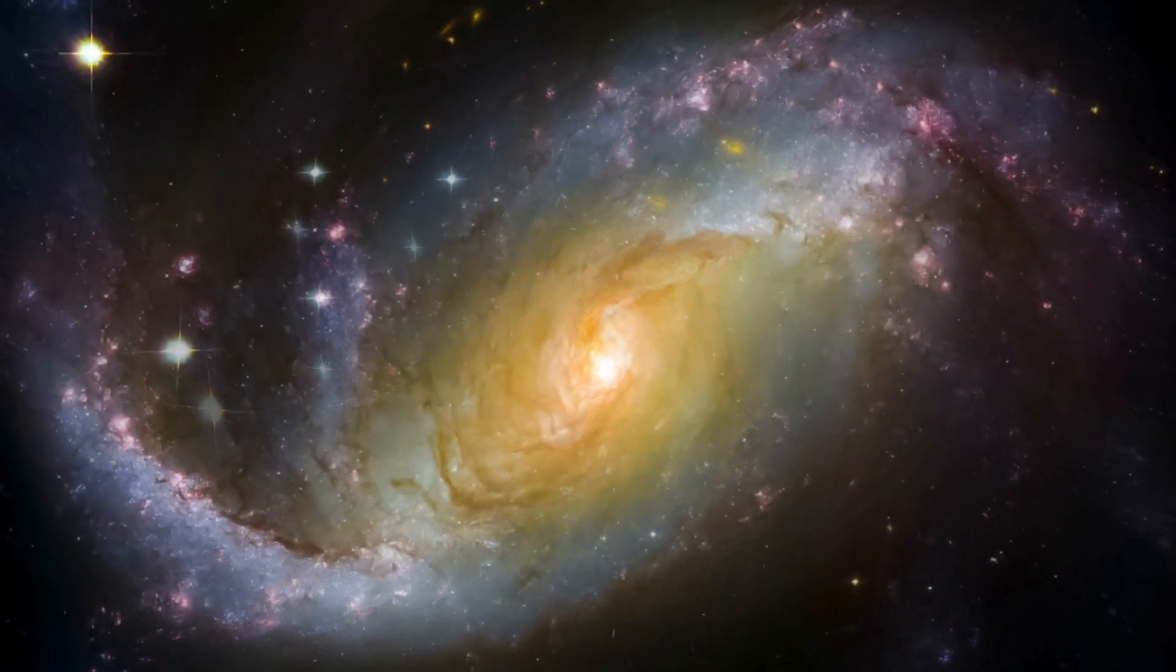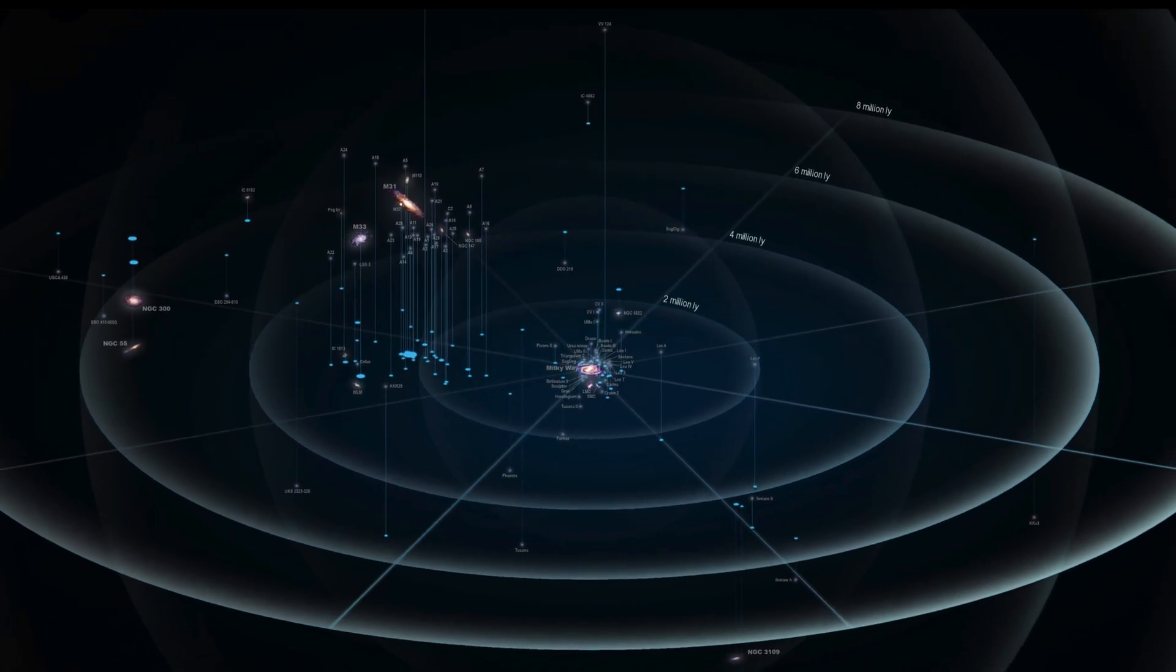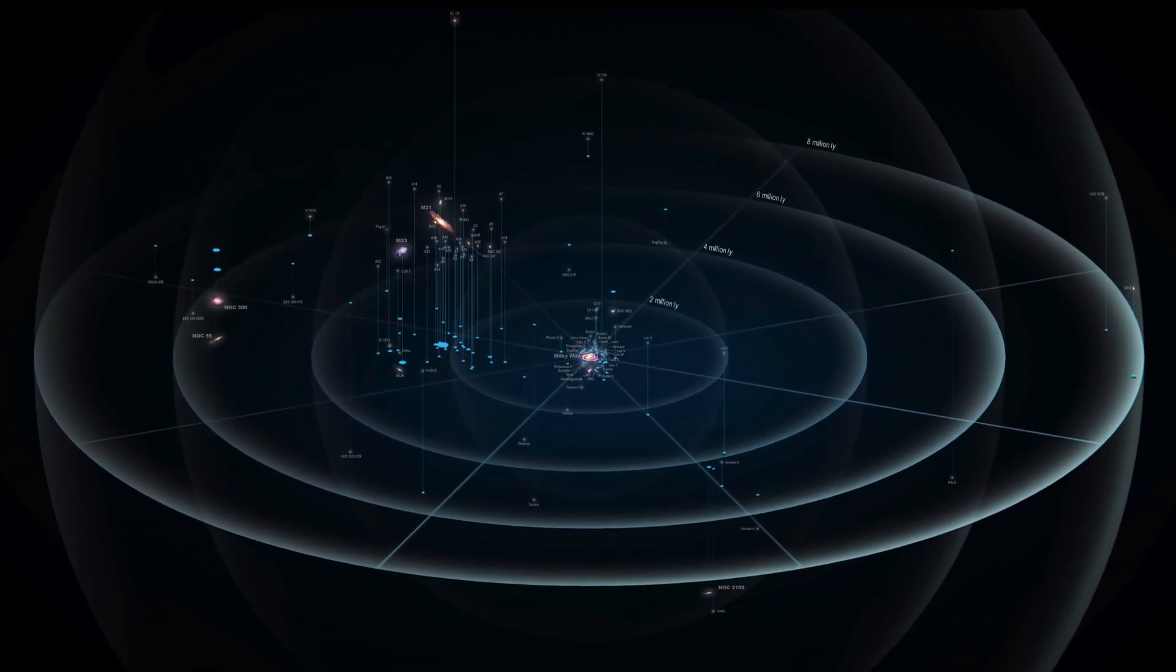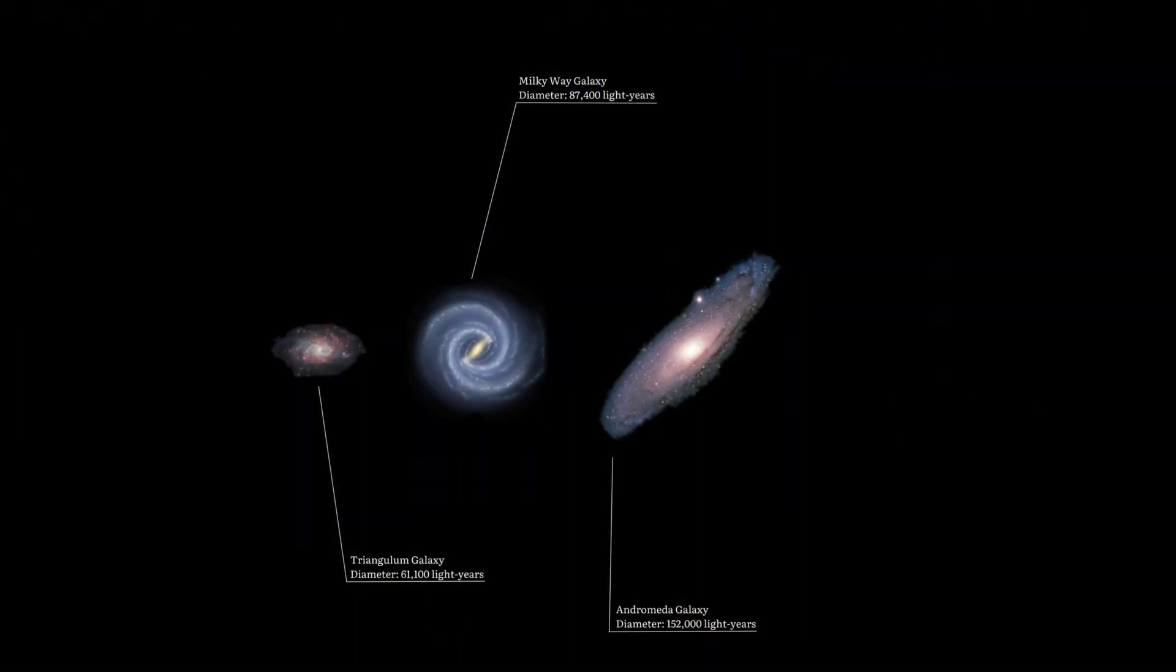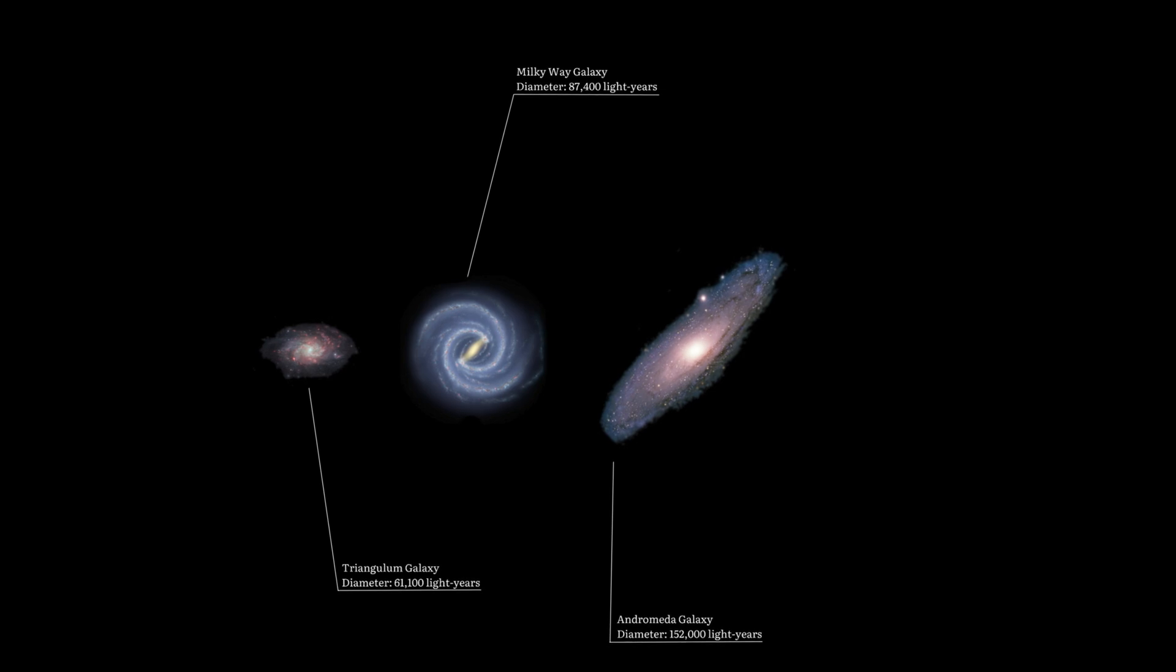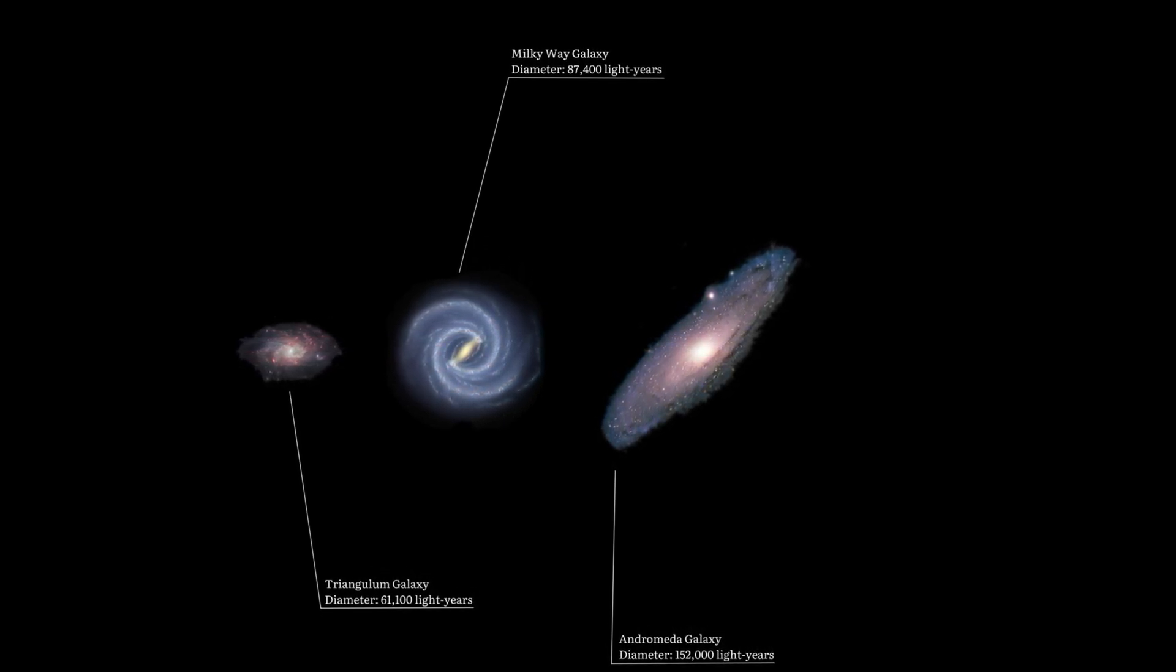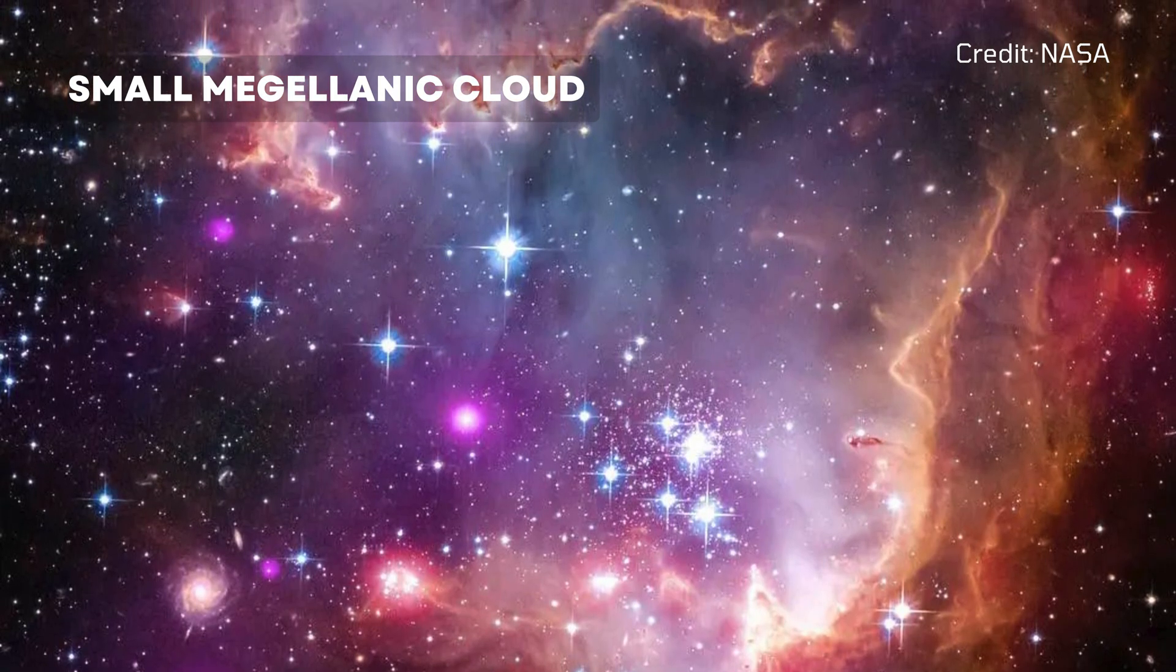When looking farther than our home galaxy, the Milky Way, we move to the local group which consists of galaxies being held together by gravity. The local group consists of about 54 galaxies, including three large spiral galaxies: the Milky Way, the Andromeda Galaxy and the Triangulum Galaxy. The rest are smaller, dwarf galaxies that orbit these larger ones.